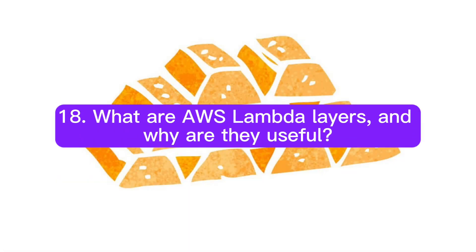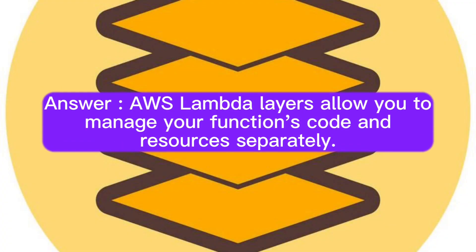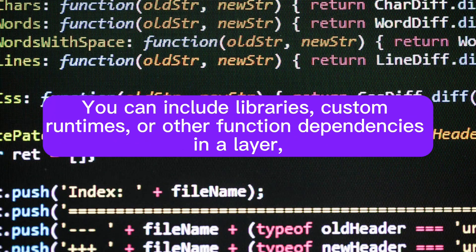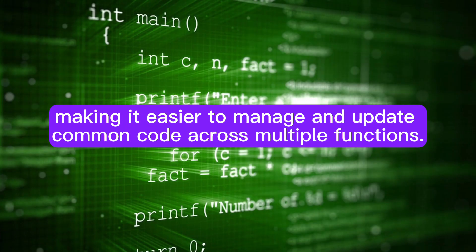Question 18: What are AWS Lambda layers, and why are they useful? AWS Lambda layers allow you to manage your function's code and resources separately. You can include libraries, custom runtimes, or other function dependencies in a layer, making it easier to manage and update common code across multiple functions.